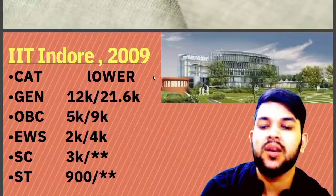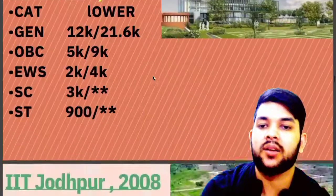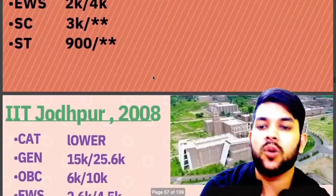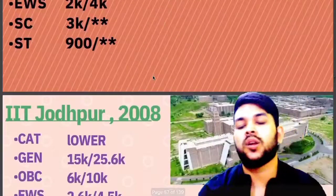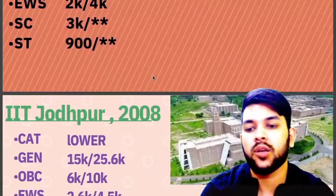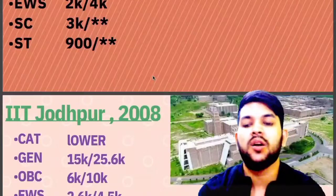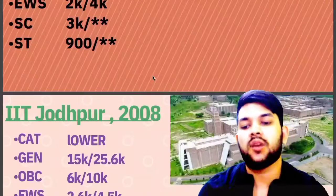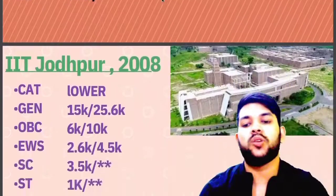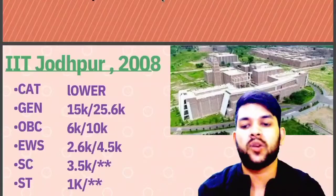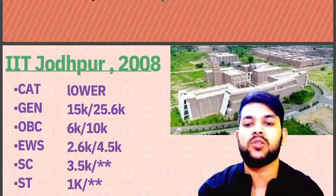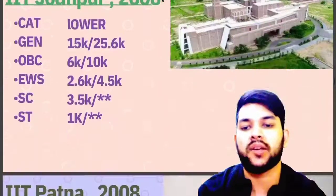Now let's talk about IIT Jodhpur. Here is the information: General – 15,000; OBC – 6,000; EWS – 2,600; SC – 3,500; ST – 1,000. For female candidates, you can check after the slash.